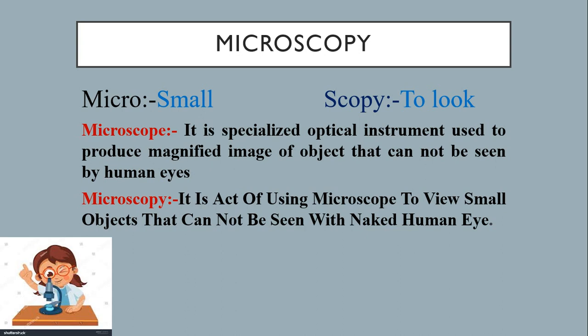By simply looking at surrounding, we cannot see how coronavirus looks. But when we use microscope, we can definitely visualize how it looks. So, microscope is an instrument which is used to magnify the object which cannot be seen by human eyes.